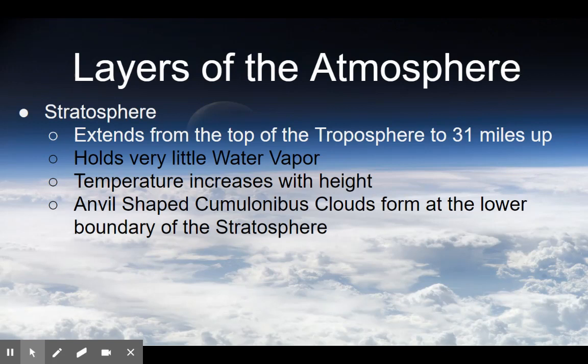The layer above the troposphere is the stratosphere, which extends from the top of the troposphere up to about 31 miles up. This layer holds very little water vapor. Unlike the temperature in the troposphere, the temperature in the stratosphere actually increases as you go higher. Anvil-shaped cumulonimbus clouds, if they get tall enough, can form at the lower boundary of the stratosphere.